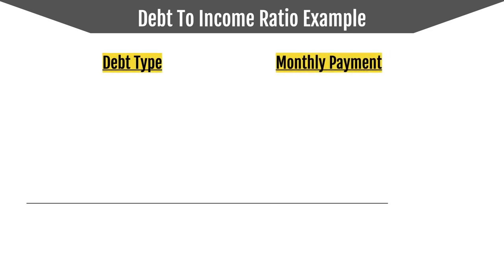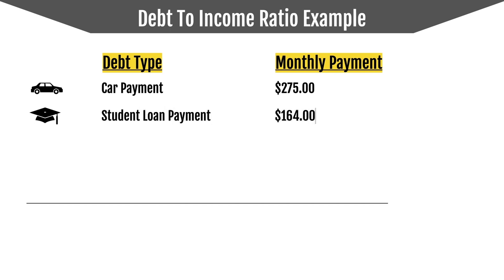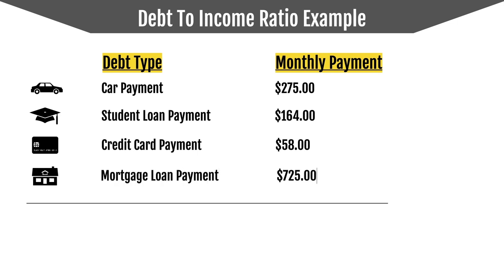Now let's look at another example. We have a car payment at $275, a student loan payment at $164 per month, and a credit card payment of $58 per month. Generally, when this is calculated for credit cards, it is the minimum payment amount — when debt-to-income ratio is calculated, it's normally done with the minimum payment. Also, a mortgage loan payment of $725. The total monthly debt payment is $1,222.